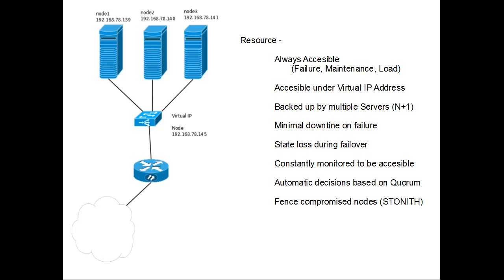Let's say we want to have a very basic cluster with three nodes so we can have quorum, which we will talk about a little bit more later. We want to have a specific resource be highly available. The first thing we want to make sure is that that resource is always accessible under the same name, the same hostname, the same IP address. The entity providing service to that resource might vary — it might be a specific node at one point in time and a different node at another.